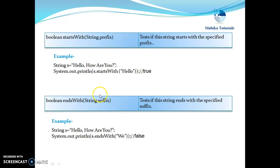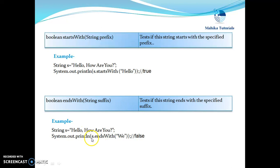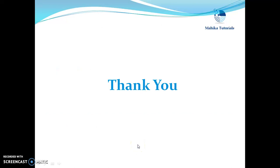Similarly, we have the endsWith method which takes a string suffix as a parameter and returns a boolean value — true or false. It tests if the string ends with the specified suffix. Suppose if we have string s with 'hello how are you' and we say print s.endsWith('v'), since the string doesn't end with 'v', we will get false as our output. These were the methods which belong to the String class.